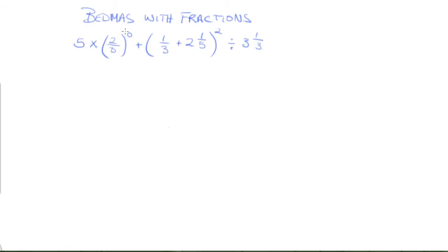So this is going to be a BEDMAS with fractions tutorial. I've written out a mathematical expression over here. It reads 5 times 2/3 to the power of 0 plus, in brackets, 1/3 plus 2 and 1/5, close bracket, squared, divided by 3 and 1/3.